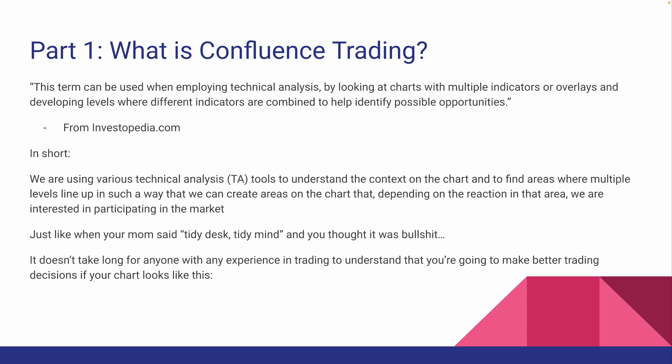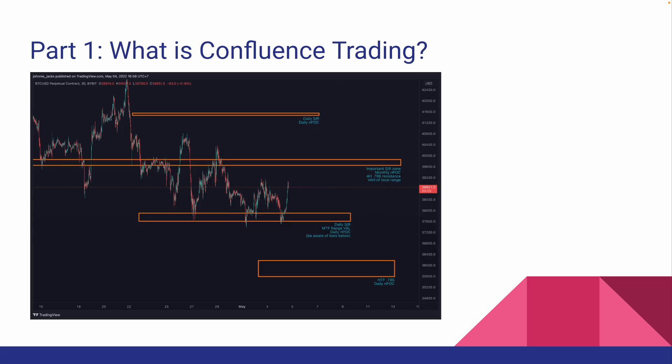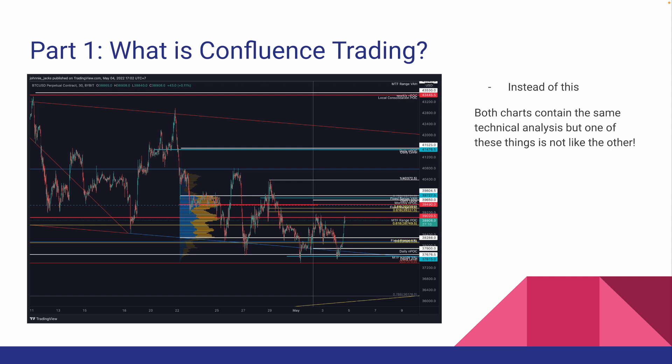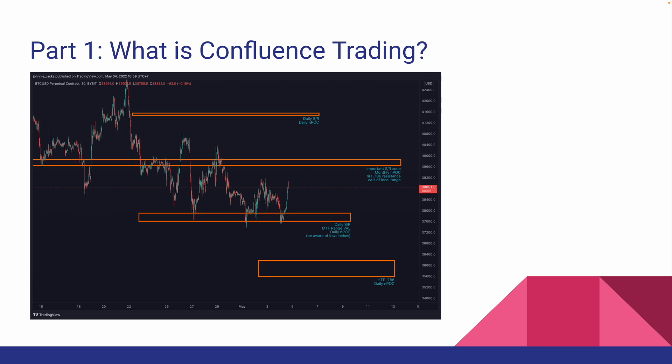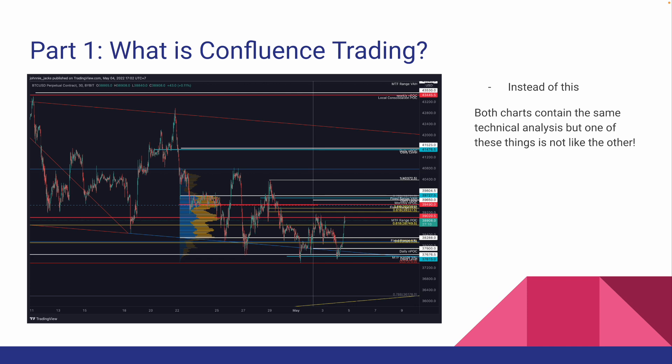This is a process every trader goes through when learning technical analysis — we learn one tool, it makes sense, but it's not all the information we need, so we add another tool and another. They all give us information we can use. However, we end up with this Jackson Pollock chart — it looks like someone's just drawn all over it. So instead of that, we end up with a very clean chart to work from. These two charts are actually the same technical analysis. The first chart shows only the areas I'm interested in participating in the market, and the second shows all the technical analysis I draw those areas of confluence from.